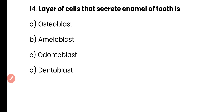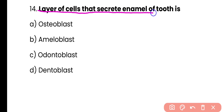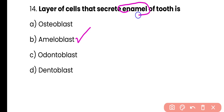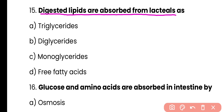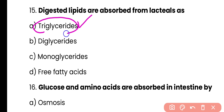Question 14: Layer of cells that secrete enamel of tooth is — osteoblast, ameloblast, odontoblast, or dentoblast. Correct answer is option B — ameloblast cells secrete enamel, whereas odontoblast cells are the dentine-secreting cells. Question 15: Digested lipids are absorbed from lacteals as — triglyceride, diglyceride, monoglyceride, or free fatty acids. Correct answer is option A — digested lipids are absorbed in the lacteals in the form of triglycerides.